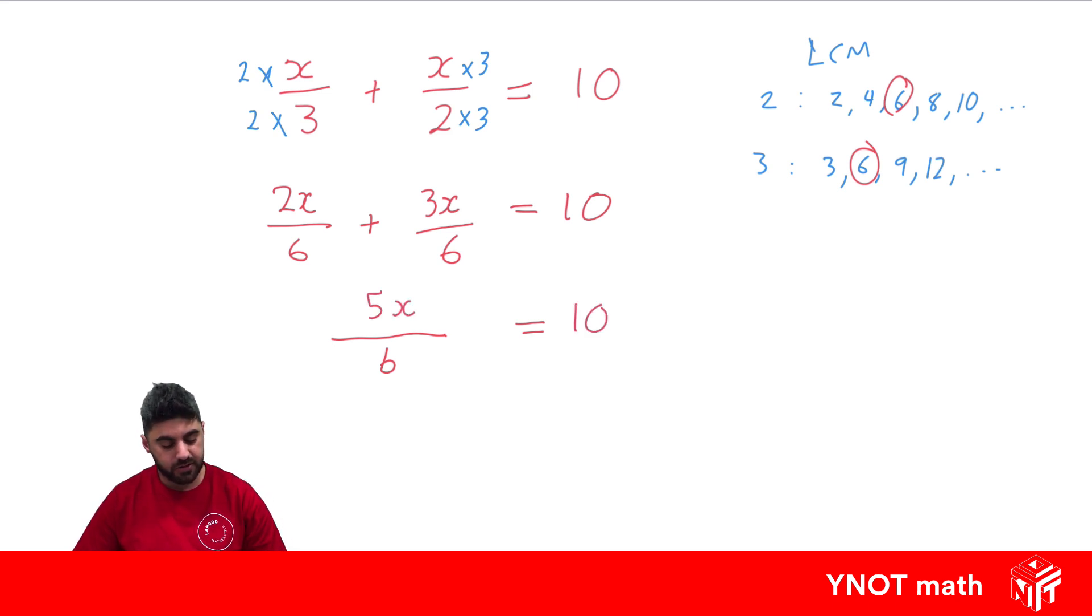And now we just have a two-step equation to solve. So we're going to get rid of the denominator first. So opposite of dividing by 6 will be timesing by 6. We're going to do that to both sides. Because 6 divided by 6 is 1, and it goes away. On that left hand side we're just left with 5x. 10 times 6 is 60.